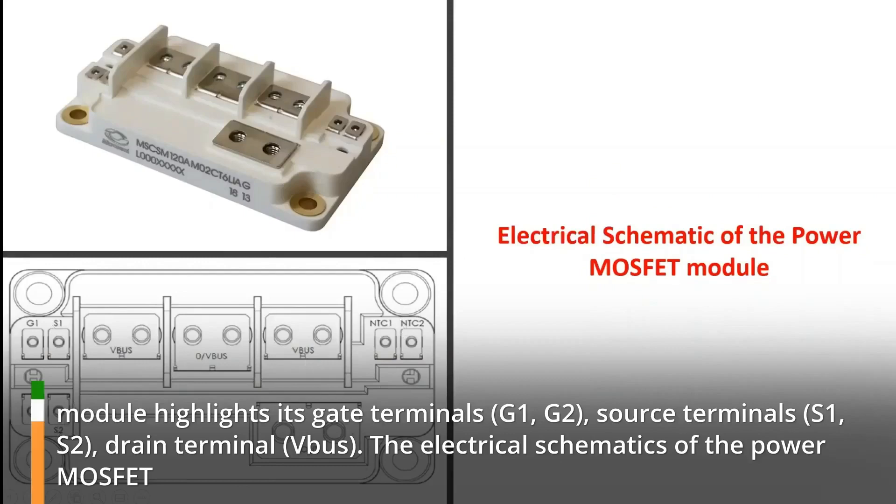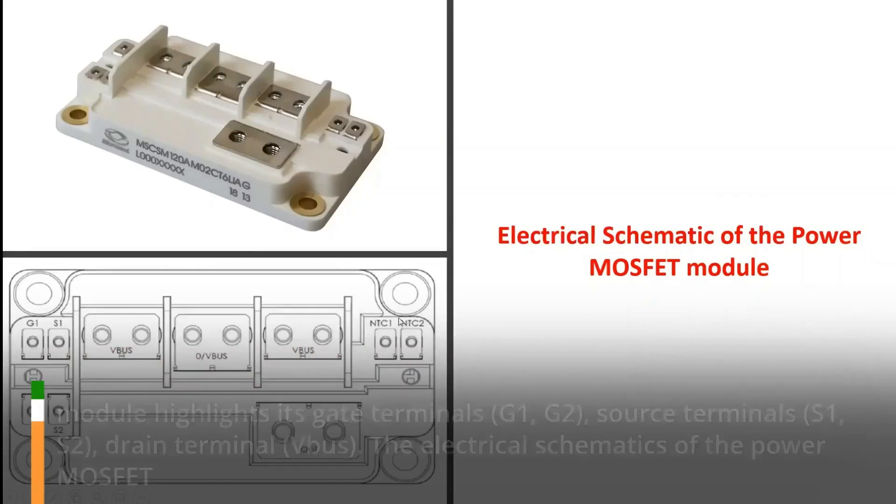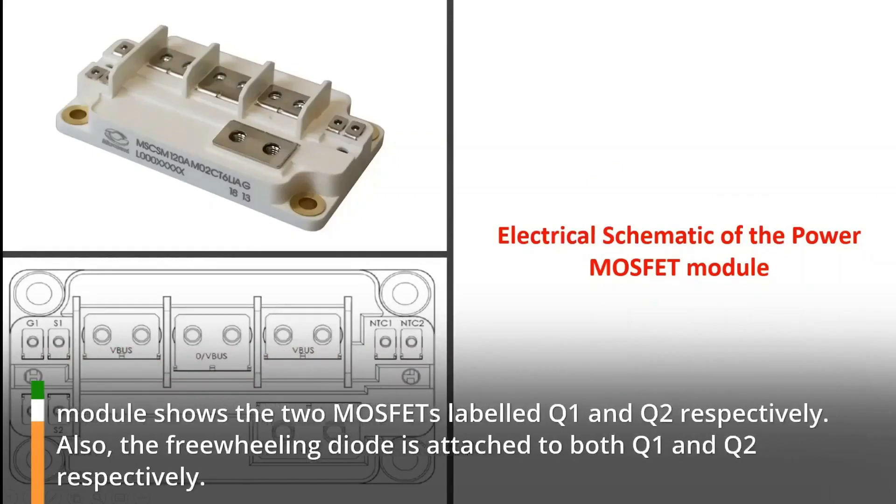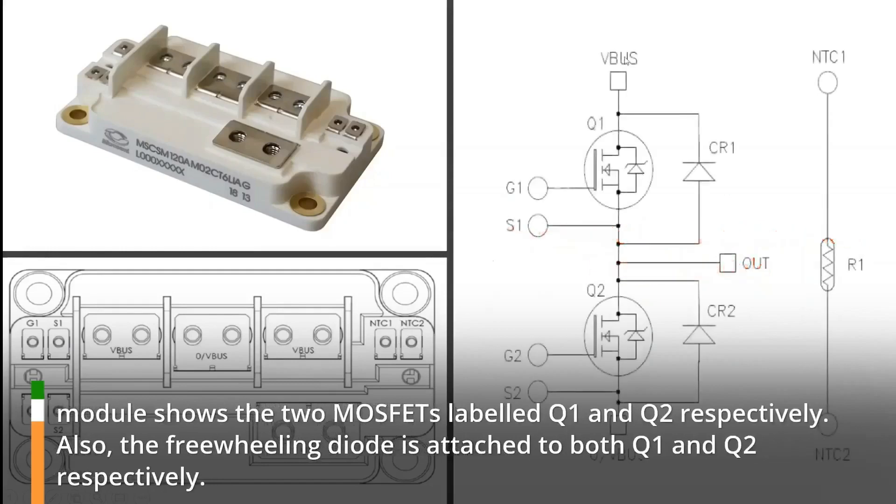The electrical schematics of the power MOSFET module shows the two MOSFETs labeled Q1 and Q2 respectively. Also, the freewheeling diode is attached to both Q1 and Q2 respectively.